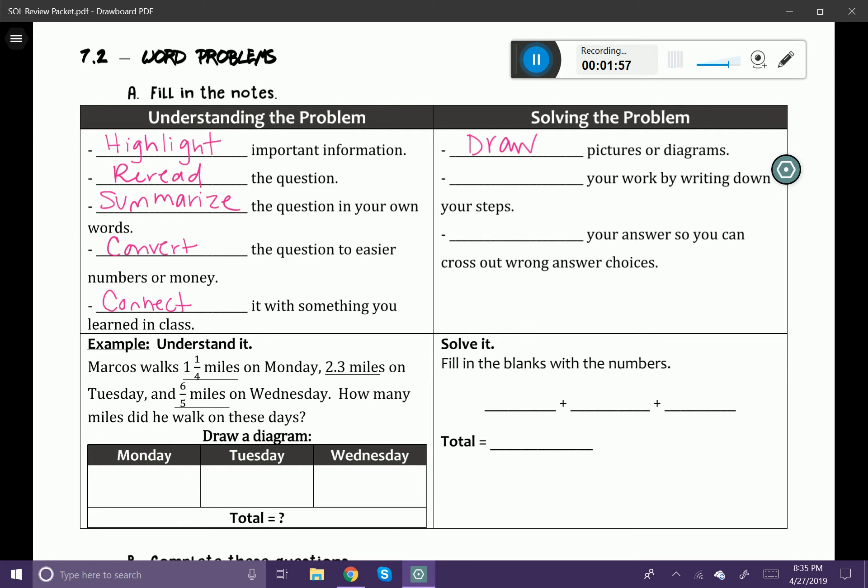Then show your work by writing down your steps. I know I emphasize this all the time, but it's really important because the more work that you show, the more you can process your thoughts. Then the last tip, estimate your answer so you can cross out wrong answer choices. A lot of the questions will be multiple choice, and most of the time, by just writing things down, you'll be able to figure out a way to eliminate at least two of the answer choices.